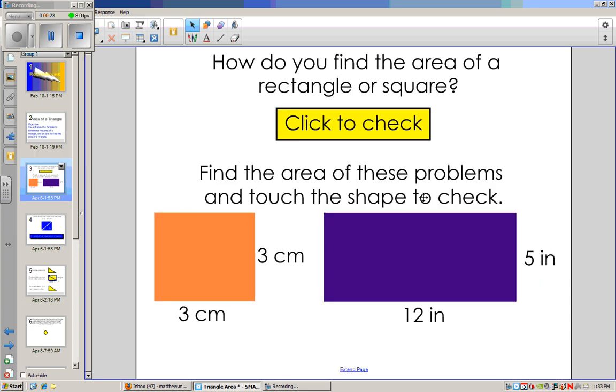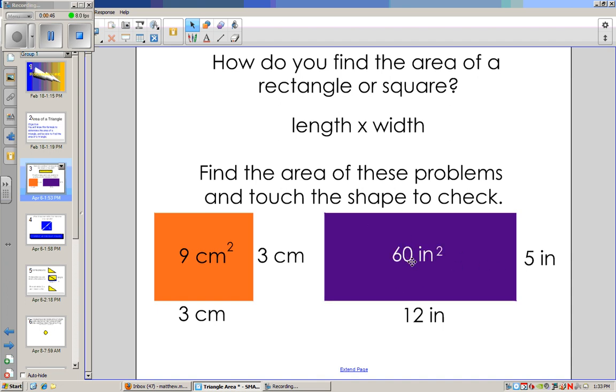But first, we're going to talk a little bit about rectangles and squares and area. So, how did we find the area of a rectangle or a square? We did length times width. If we look at this square down here, if we wanted to find its area, we would do 3 times 3, which would give us an area of 9 centimeters squared. Where this rectangle to the right, 12 times 5, gives us 60, so the area is 60 inches squared.